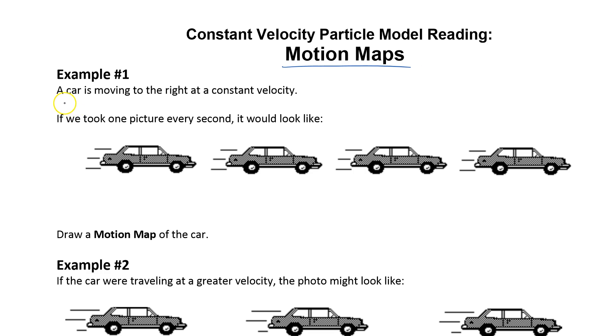In the first example a car is moving to the right at a constant velocity. If we took one picture every second it would look like this. So if you imagine a stroboscope where the light blinks every second and we put all the pictures on one frame.